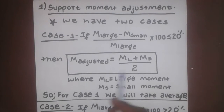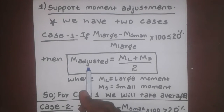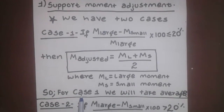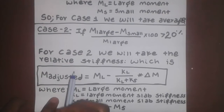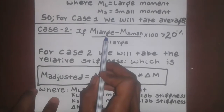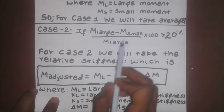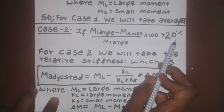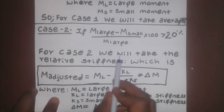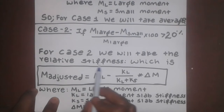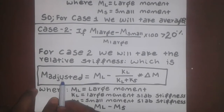Sometimes a minus analysis — in case 1, we will take the average. For case 2, we will take the relative stiffness, which is the adjusted moment.